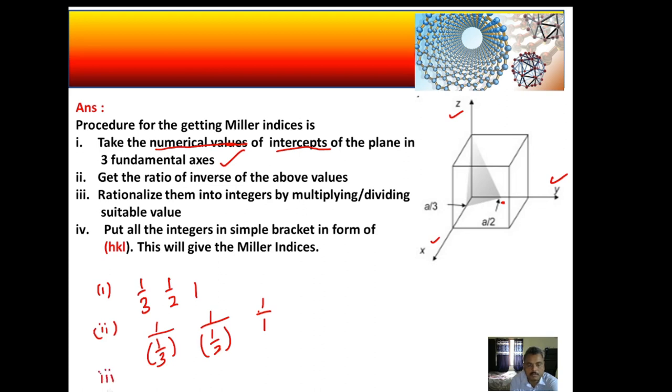The third step is: rationalize them into integers by multiplying or dividing suitable value. Now you can see these numbers 3, 2, 1 are already integers, so we do not have to do anything else.